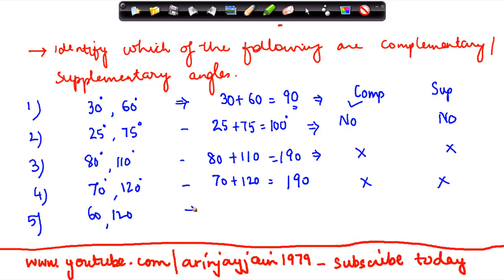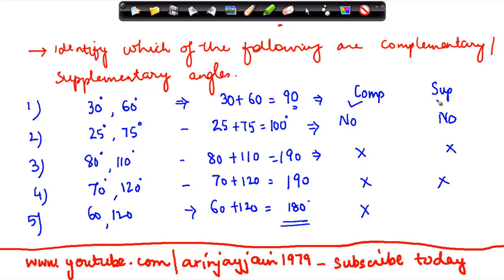Let me take another example: 60° plus 120° equals 180°. Is it complementary? No. But because the sum is 180°, which is the condition for supplementary angles, this is supplementary.